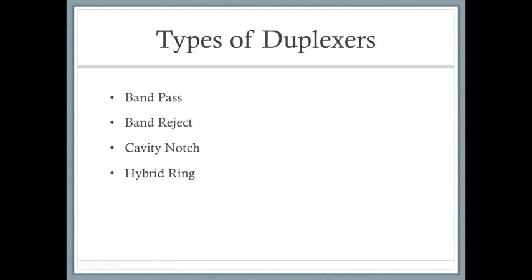There are many different types of duplexers: band pass, band reject, cavity notch, and hybrid ring. The band pass type is far superior for dense site use; multiple cavity strings provide added selectivity for the receiver, though it has higher cost and greater space requirements, and can be tuned for multi-frequency transmitters and receivers. Band reject duplexers have lower insertion loss than band pass types, lower cost to manufacture, and savings in materials and labor.